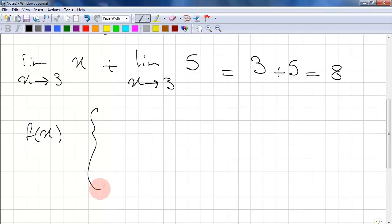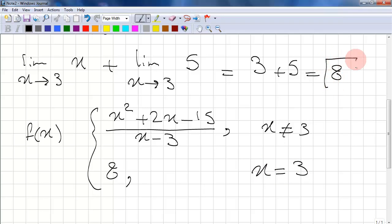So the function x squared plus 2x minus 15 over x minus 3, when x is not equal to 3, and 8 when x equals 3, is continuous at x equals 3. So our final answer is 8.